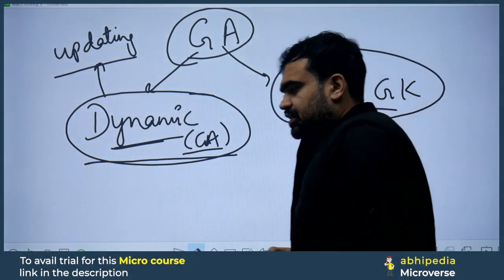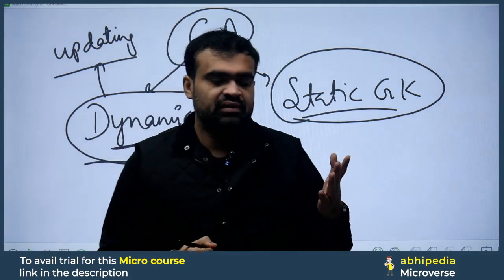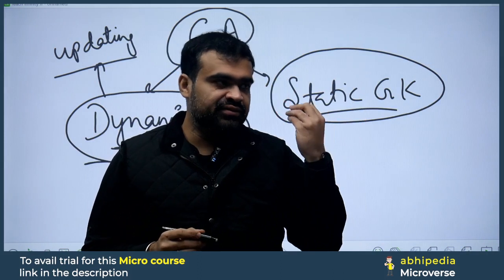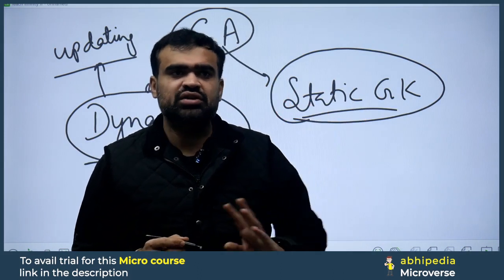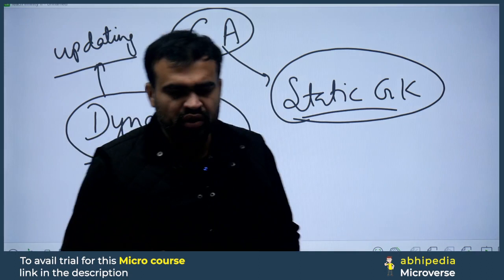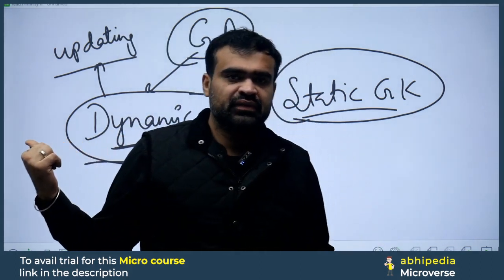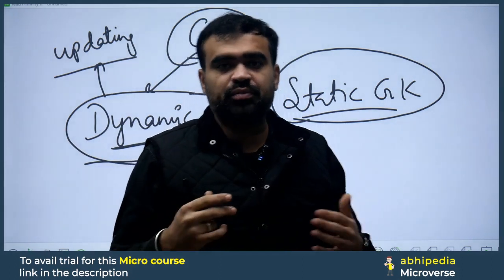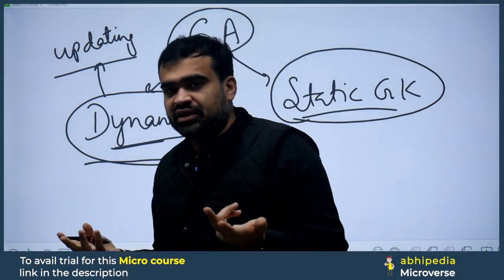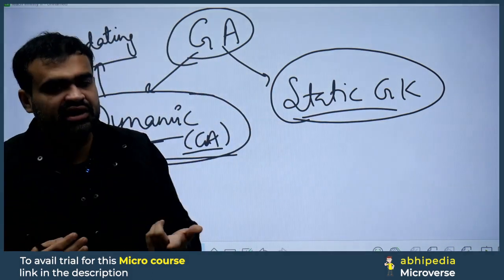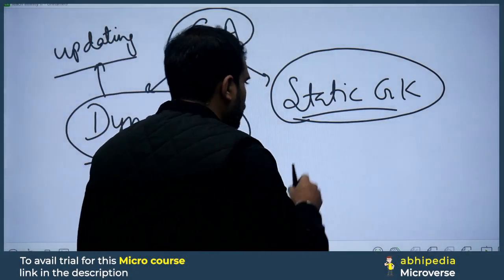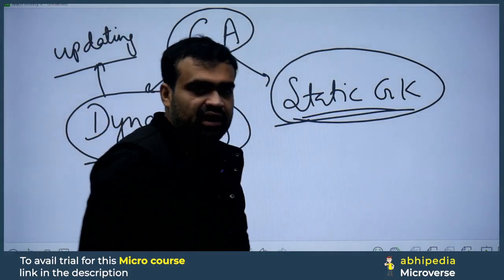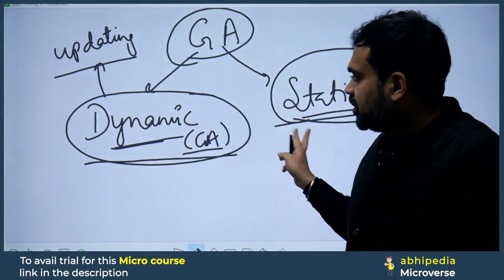Then there is the Static Part — Static GK as it is called. This is the part that is fixed. For example, the Seven Wonders of the World is part of GK but it is fixed and doesn't change — or very rarely changes over time. Similarly, facts like the tallest mountain in India, national parks, wildlife sanctuaries — these types of questions fall under Static GK. You need to cover both parts.